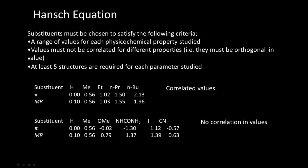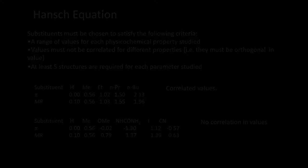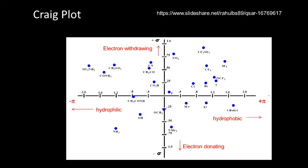Negative pi means substituents contribute more towards lipophilicity; positive means they contribute towards hydrophobicity. There is something called a Craig plot, which was shown in the previous class. You have electron withdrawing here, electron donating here, hydrophobic here, and hydrophilic here. Various substituents like chloro, bromo, or NO2 all lead to increase in electron withdrawing and increase in hydrophobicity.